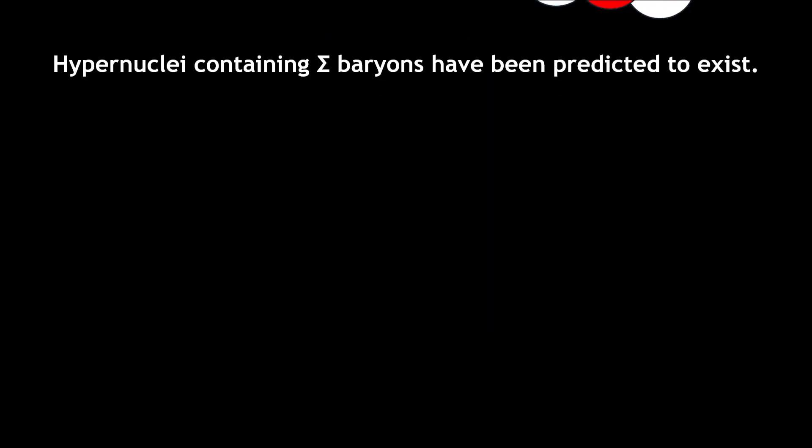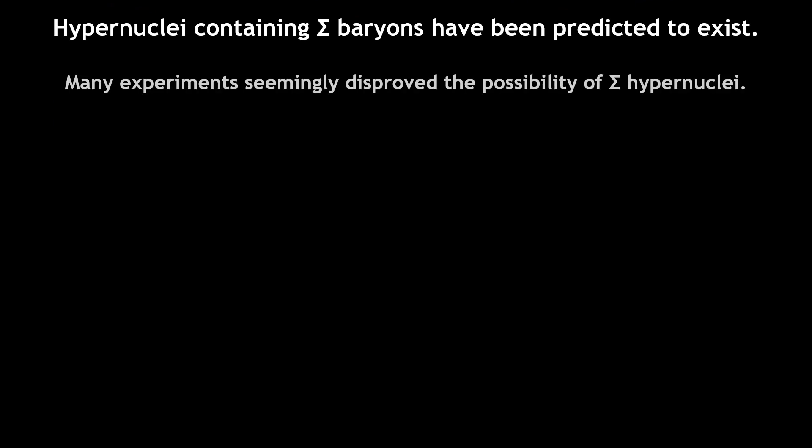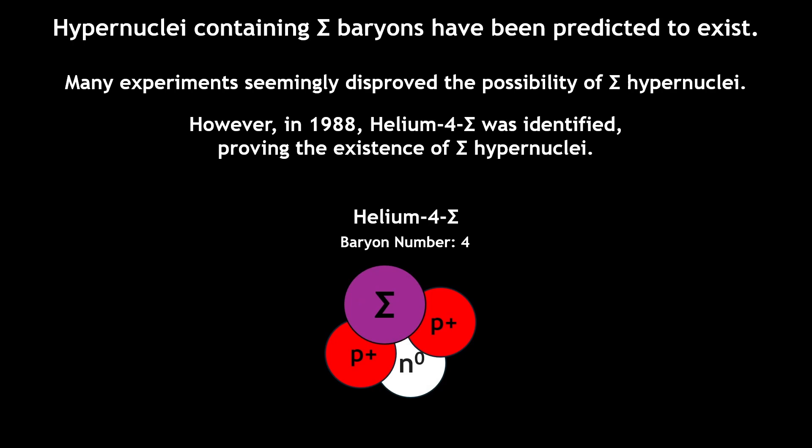There are predicted hypernuclei containing sigma baryons, but a series of experiments continue to disprove the existence of many predictions. However, an experiment in 1988 definitively identified the light hypernucleus known as helium-4 sigma, verifying the existence of the sigma hypernuclei.